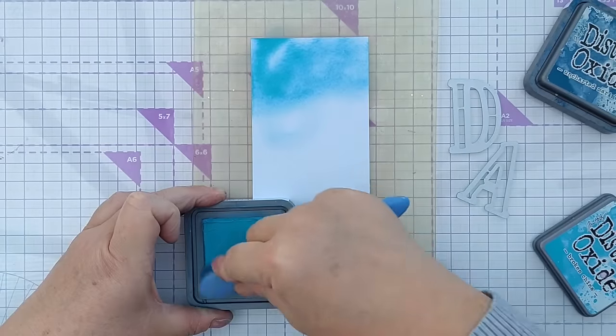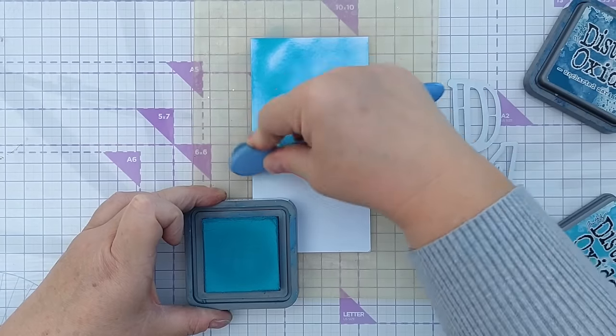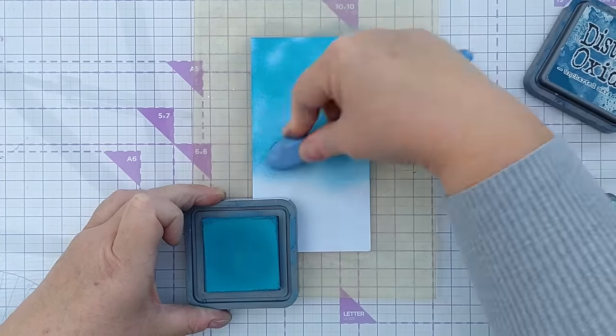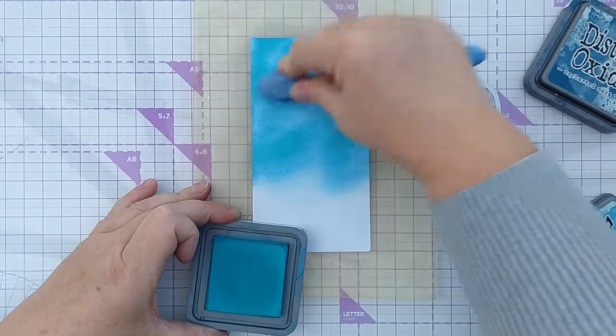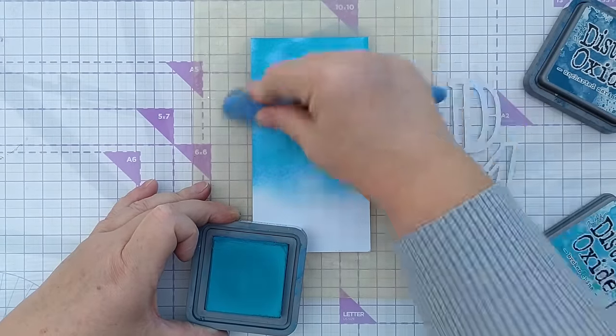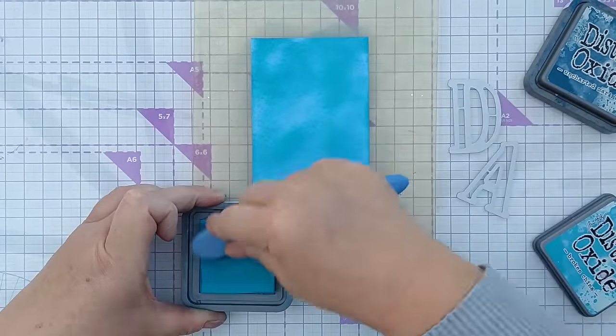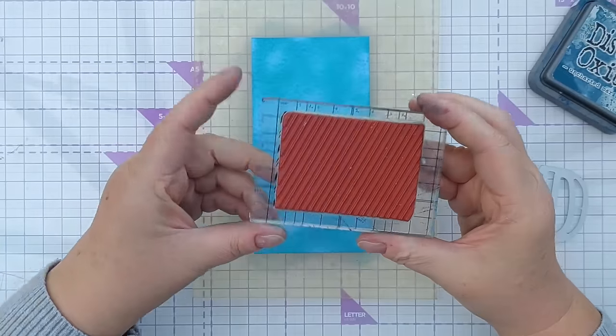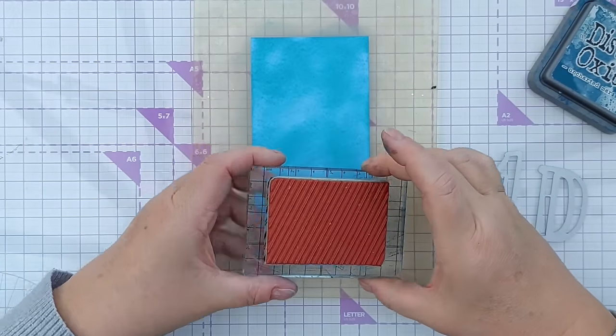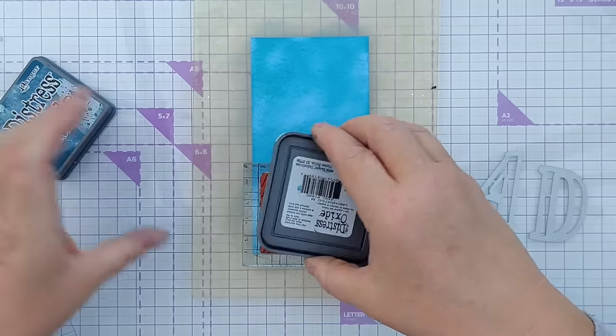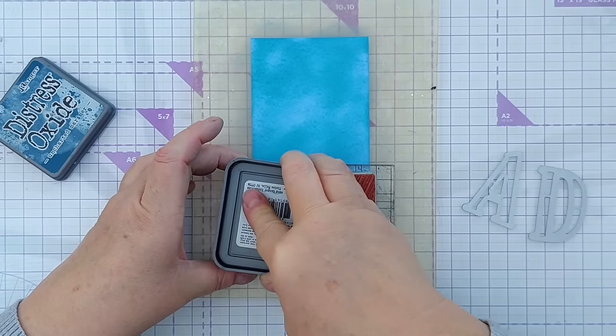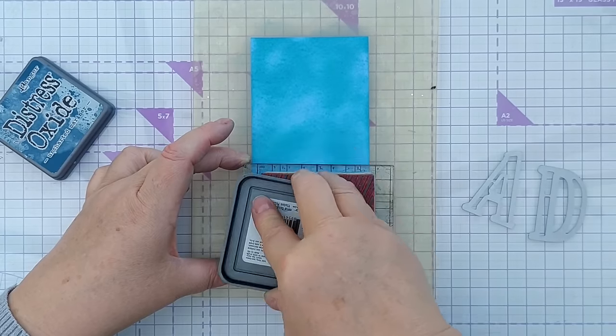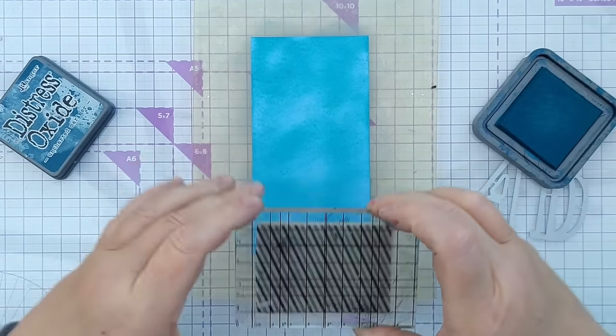For card number two, I'm going to use some Alphabet dies to spell out the word Dad. And I'm going to cut those from this bit. This is Broken China, which is a really lovely greeny blue. So now I've got this rubber stamp. It's got diagonal stripes on it. And I'm going to use Uncharted Mariner to ink that up. This is a darker greeny blue. And I'll stamp that on.